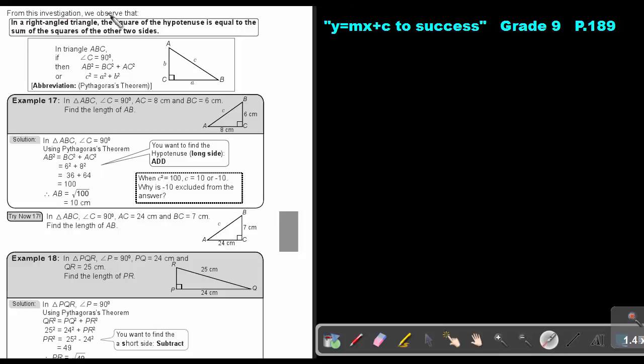From this investigation, we observe that in a right angle triangle, the square of the hypotenuse is equal to the sum of the squares of the other two sides. So basically, if I form a square here, all the sides must be equal. And I form a square out of this one and a square out of this one. So if I add up these two shorter areas of the squares, that will be equal to this big square.